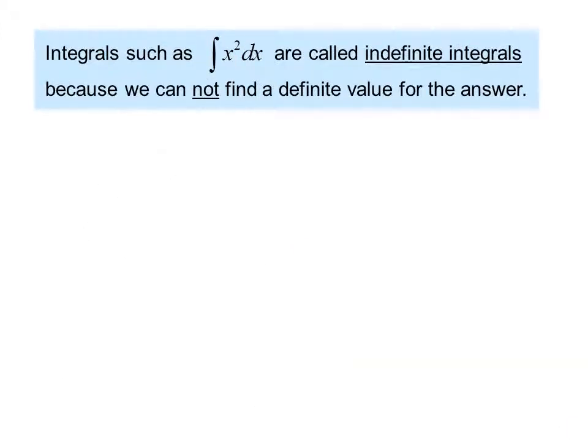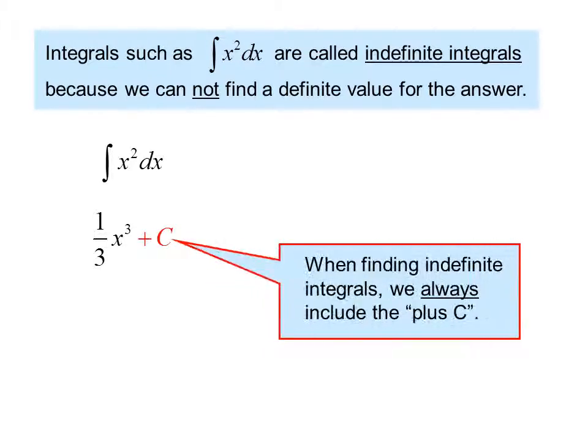Integrals such as the integral of x squared dx are called indefinite integrals because we cannot find a definite value for the answer. The integral of x squared dx is 1 third x cubed plus c. When finding indefinite integrals we always include the plus c.